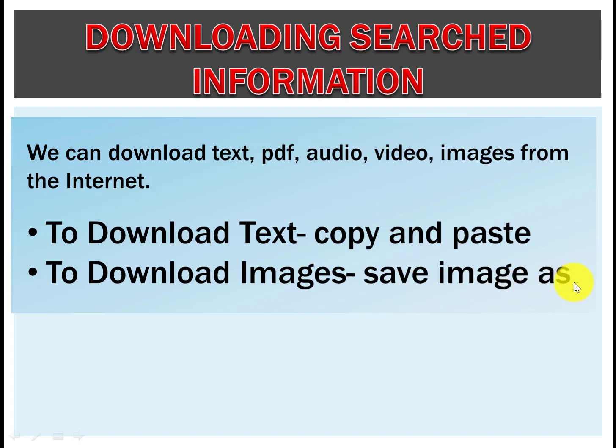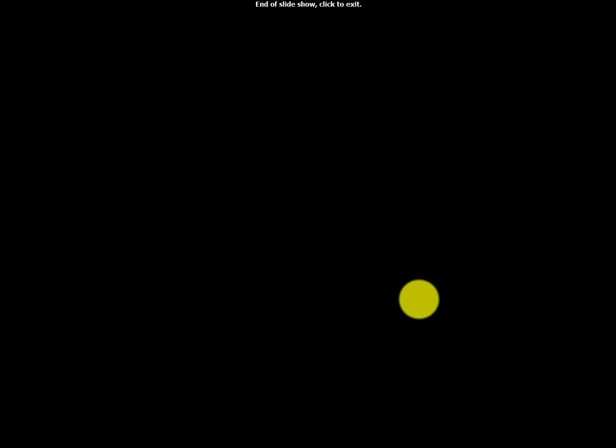To download images, click on the image and right-click on it. There will be an option: Save Image As. A window will open — type the name of the file and the path of your current computer directory, then click on the Save button. Thank you.